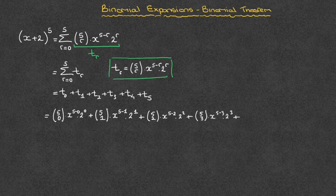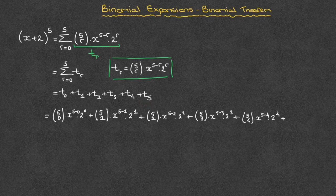We add on to that t4, replacing each r by 4. So that's (5,4) times x to the power of 5 minus 4 times 2 raised to the power of 4. And finally, we add on to that t5, for which we replace every r by 5. So that's (5,5) times x to the power of 5 minus 5 times 2 raised to the power of 5. At this stage, we have written all of the terms of this expansion.